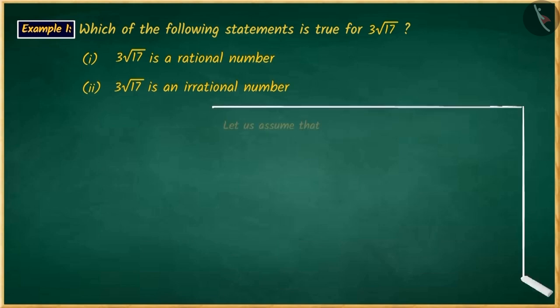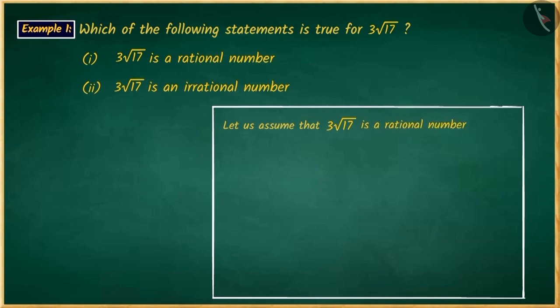Let us first assume that 3 square root 17 is a rational number. So, we will write it as p/q, where p and q are co-prime numbers. And p and q have no common factors other than 1.